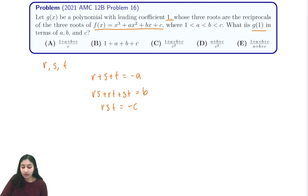Now let's think about our polynomial g(x). It has roots 1/r, 1/s, and 1/t. We know that the leading coefficient is 1.